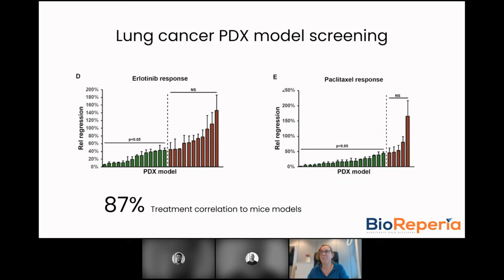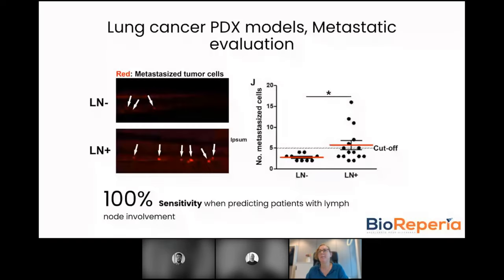Out of these 25 PDX models, all of them established microtumours in the zebrafish, and the treatment was made with erlotinib and paclitaxel. Looking at how well these models correlate to mice, we were able to see an 87% treatment correlation to the outcome of treatment seen in mice. By using the zebrafish model to evaluate metastases from these PDX models, we were able to predict patients with lymph node involvement with 100% accuracy based on the metastatic ability of the model.